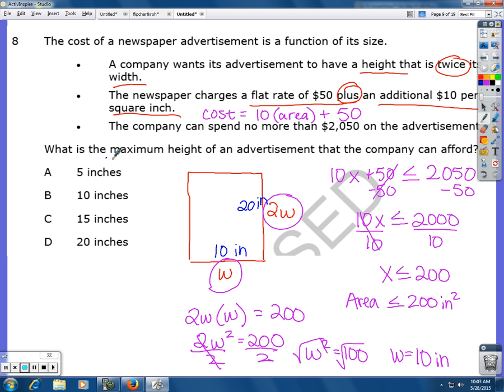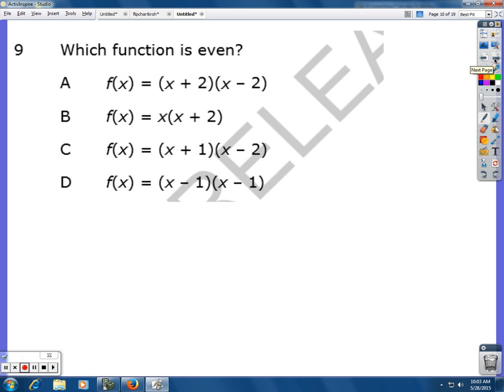So it says, what's the maximum height of an advertisement that the company can afford? So that would be 20 inches for the maximum height.